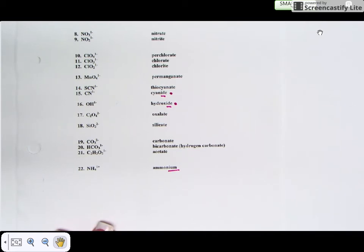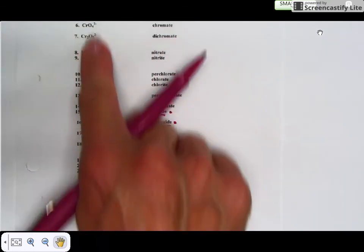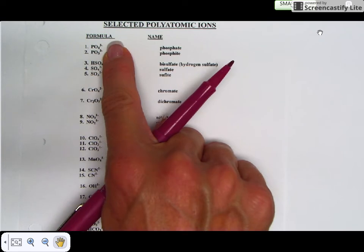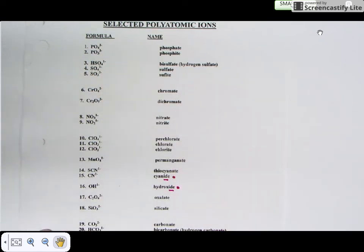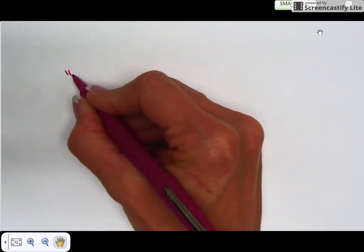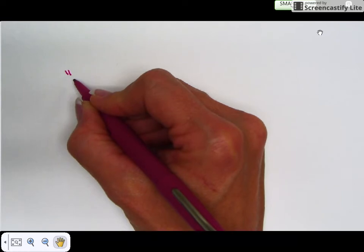All right, so that's a couple things I want to point out. The endings, pay attention to that. On the formulas column here I've given you the formulas with the charges for these ions. There's 22 of these, and here's the first little pattern I want to share with you that will help simplify, hopefully, your learning of this.